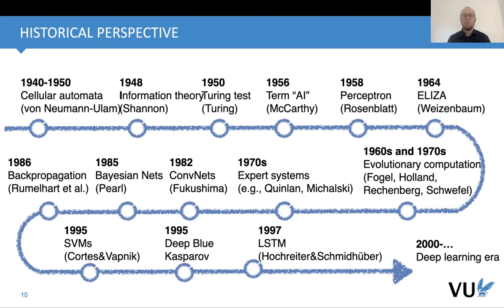There are anecdotes that Vapnik met Yann LeCun in a café and Vapnik said that neural networks are passé — that we should focus on something different. But then people actually started thinking of special tricks they could use to learn better and in deeper architectures. Even in 1997, Sepp Hochreiter and Jürgen Schmidhuber proposed long short-term memory, a specialized recurrent neural network capable of learning longer dependencies in sequences — a big step towards deep learning.